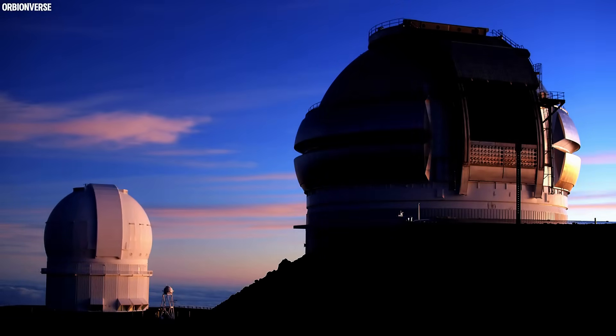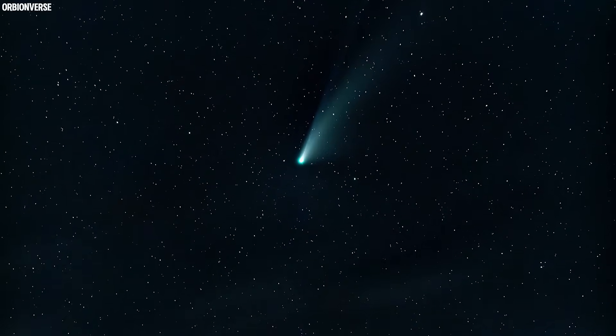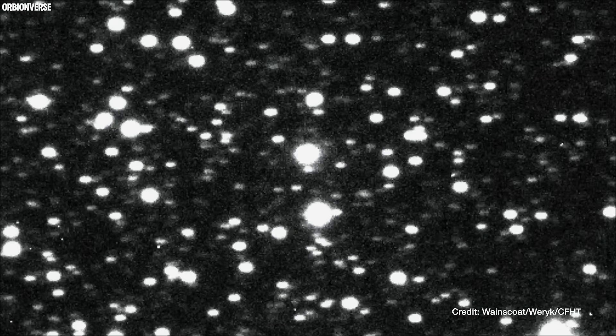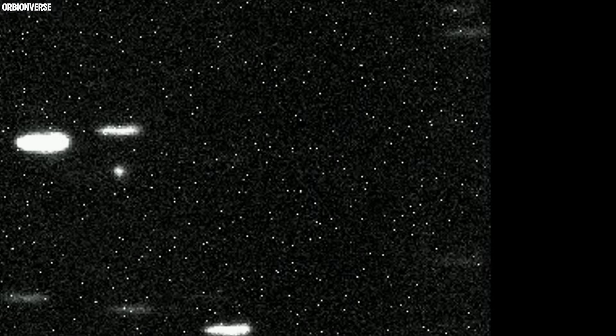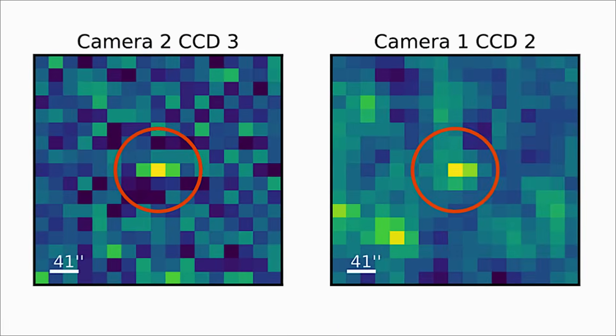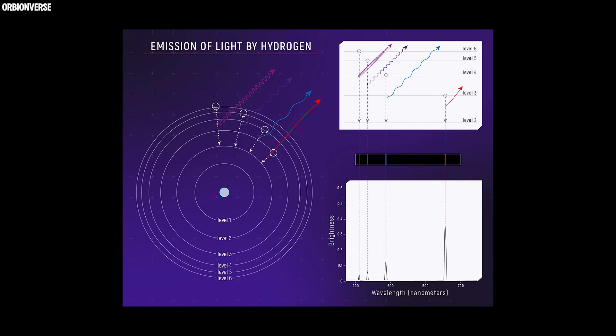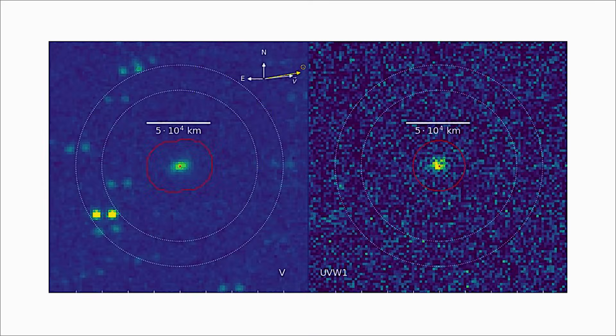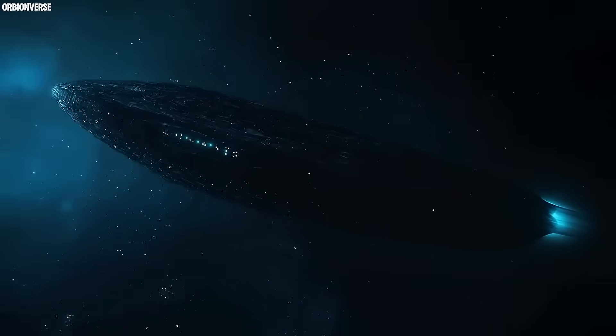Then came a day that split belief. At 2:41 UTC, the comet flared again, a concentrated beam of light that briefly rivaled the sun's brightness in ultraviolet. For a full eight seconds, every solar probe reported total sensor saturation. When the light subsided, new material appeared around Three-Eye Atlas, rings of faintly metallic dust orbiting its nucleus in perfect symmetry. Five rings, equidistant, each one humming with faint radio emissions. To anyone watching, it looked less like a comet and more like an awakening machine.